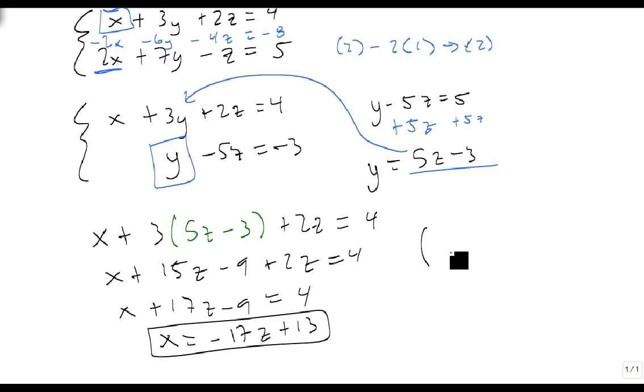so our answer is the point minus 17z plus 13, 5z minus 3, and z. Notice we have a parametric answer again. And that's what we look for, is these parametric answers.